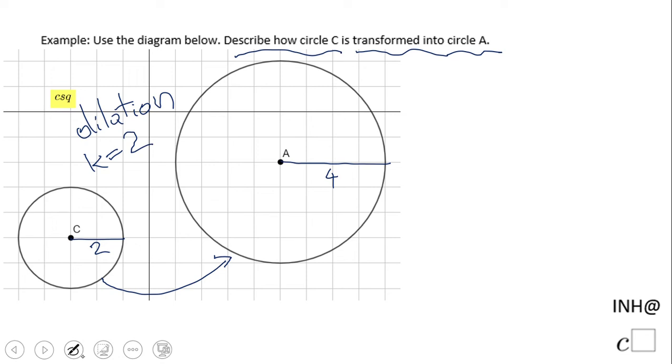We need to be aware that this circle was moved 1, 2, 3, 4, 5, 6, 7, 8... 8 units right. 1, 2, 3... 3 units up. Okay, so that's the thing.